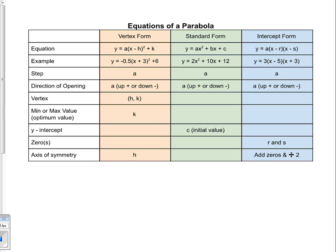We're going to take a look at the different equations of a parabola, specifically of a quadratic relationship, and what type of information you can find from them. This table will be really helpful for that. There are three forms of an equation for a quadratic relationship and for a parabola. One is vertex form in orange, the second is standard form in green, and the third is intercept form, or factored form, in blue.